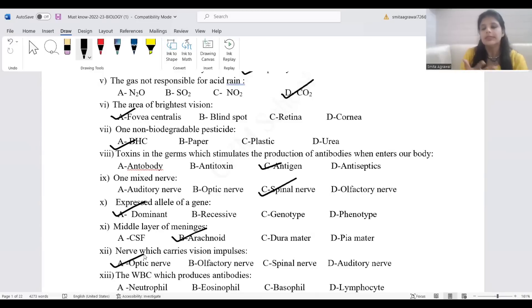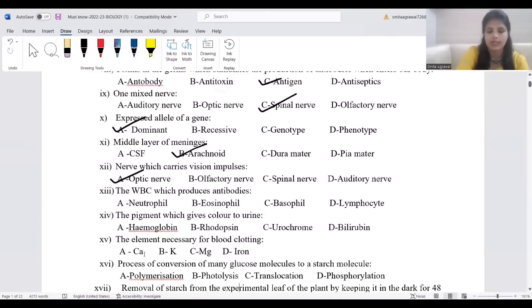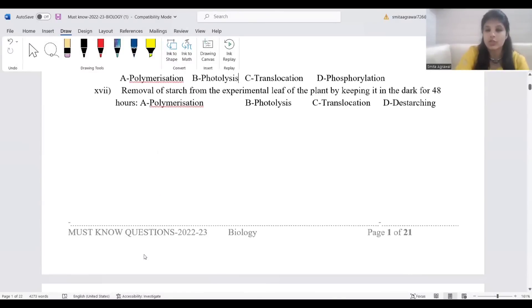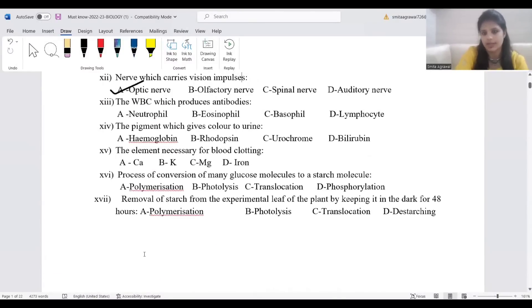Optic nerve for vision, olfactory for smell, spinal nerves are mixed nerves, auditory nerves for hearing. WBC which produces antibodies: lymphocytes exclusively produce antibodies.